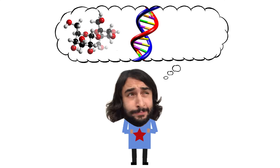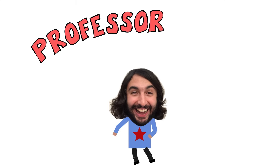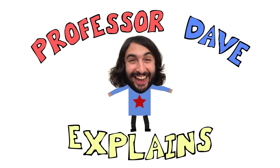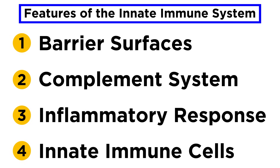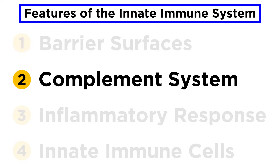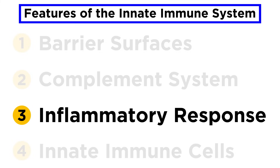Professor Dave Explains. In moving through the components of the innate immune system, some aspects will seem quite abstract and foreign, like the complement system we just learned about. But the next phenomenon we will investigate is something that everyone is familiar with, and that is inflammation.